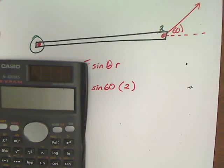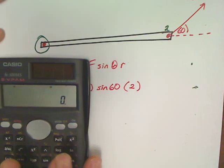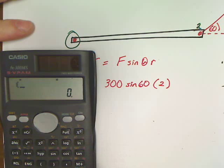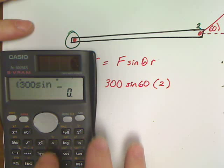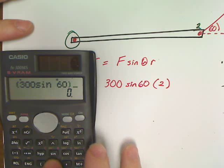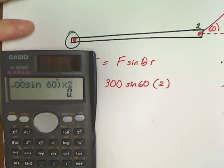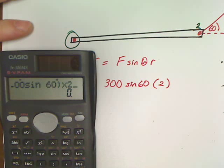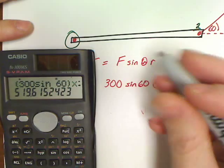Now this older Casio here can be kind of a booger. That's not one of my favorite calculators. But anyway, 300 sine 60 times two. Trying to group it all together so my order of operation don't get messed up. And I've got an answer of 520.